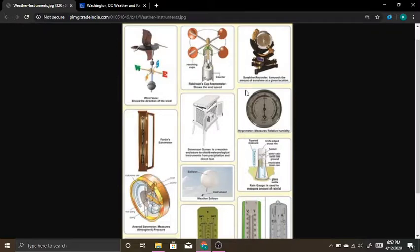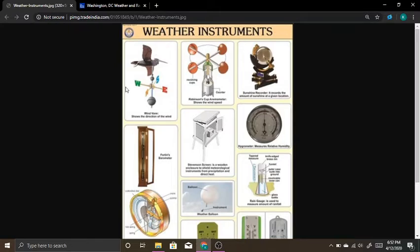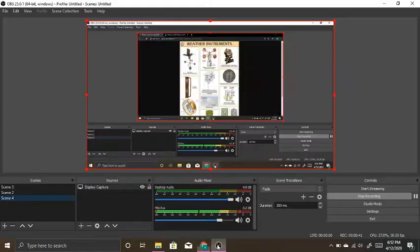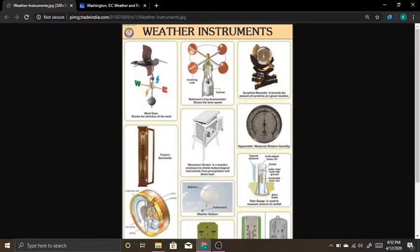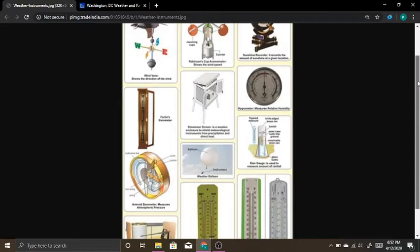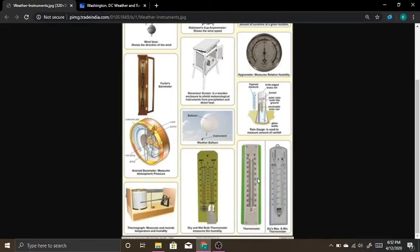So here are some weather instruments that we can use. This is called a weather vane and that shows the direction of the wind. This is called an anemometer which shows the wind speed. There's a tool that measures the humidity, which is how much water is in the air. You've seen a thermometer before which is the temperature. So different tools like that go into making up the radar.